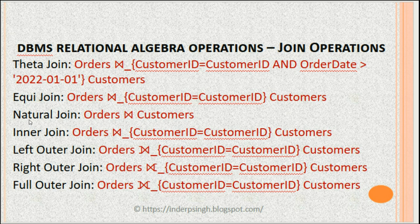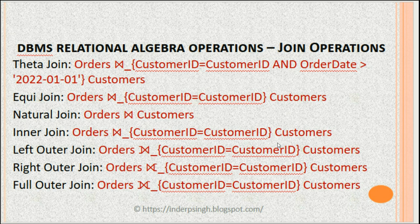Natural join is a type of equi join where all columns of the same name have to match. So if customer ID is the only common column between orders and customers, natural join produces only the matching rows on that column. Inner join also produces only matching rows — for example, an inner join between orders and customers where customer ID in orders equals customer ID in customers will produce only the matching rows.